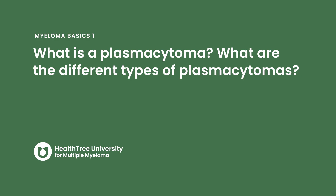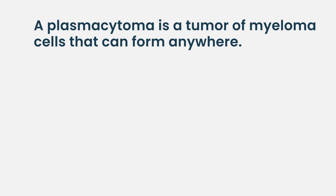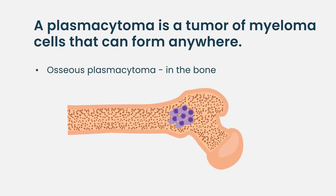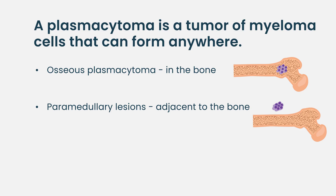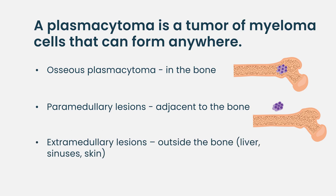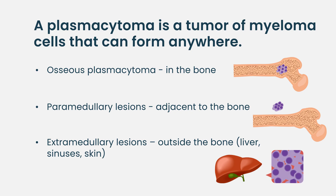What is a plasmacytoma and what are the different types? Plasmacytomas are where multiple myeloma differs from other blood cancers like leukemia — it's more like lymphoma where people can get solid tumors. A plasmacytoma is a tumor of myeloma cells. These can form anywhere: in the bone, which we call an osseous plasmacytoma; adjacent to the bone, called paramedullary disease; or extramedullary disease, which is outside the bone entirely — in the liver, sinuses, or even on the skin.